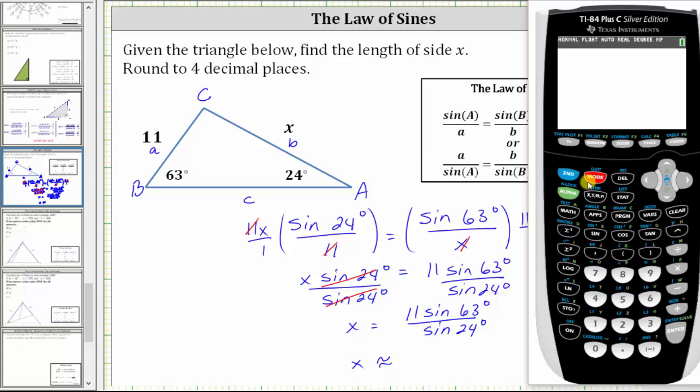When entering this quotient, we do need the numerator in parentheses. And therefore we have open parenthesis, 11, sine 63, closed parenthesis for the sine function value, another closed parenthesis for the numerator, and then we divide by sine 24 degrees.